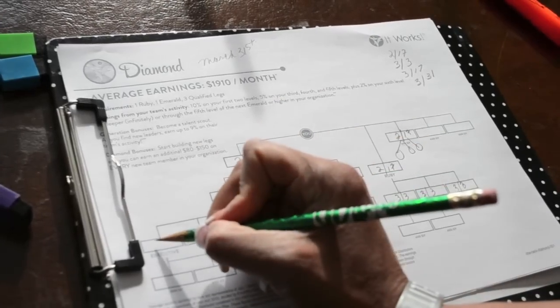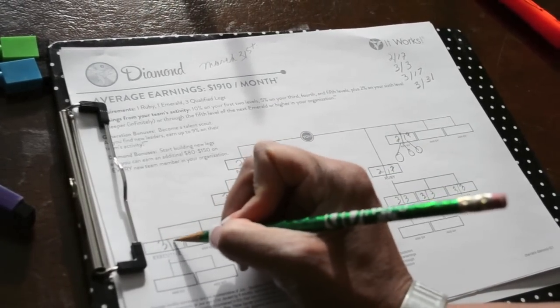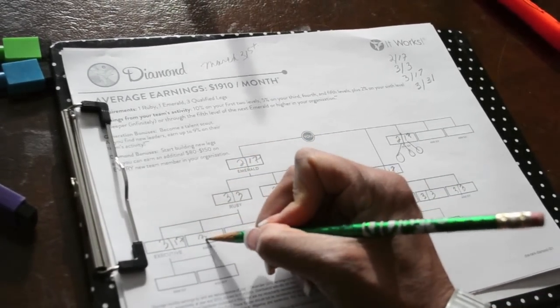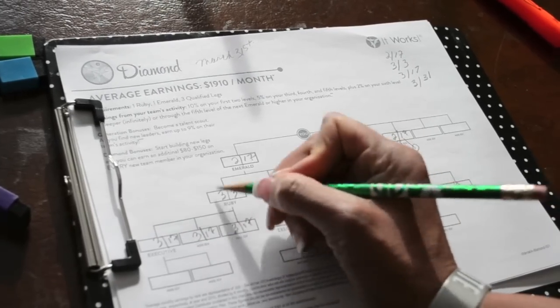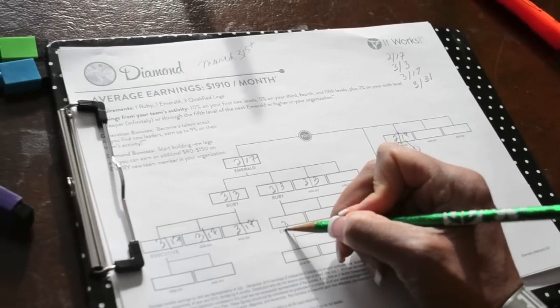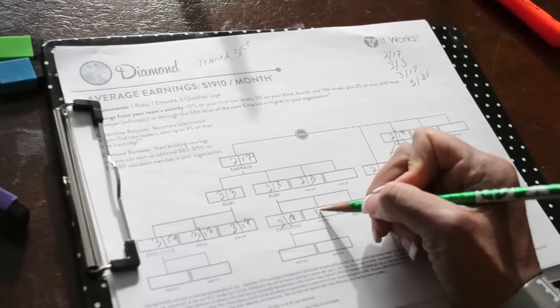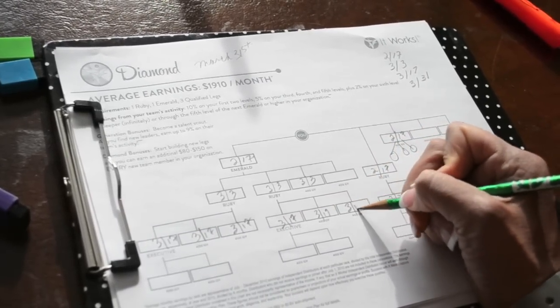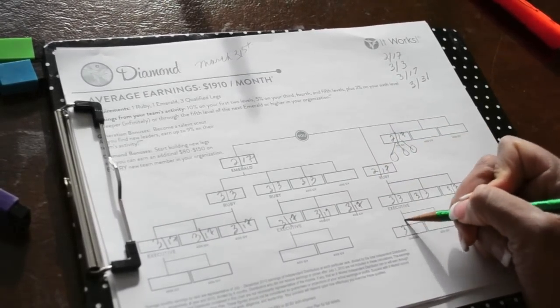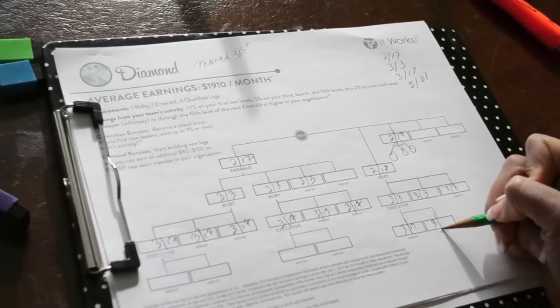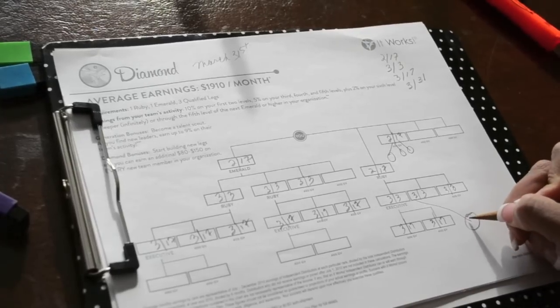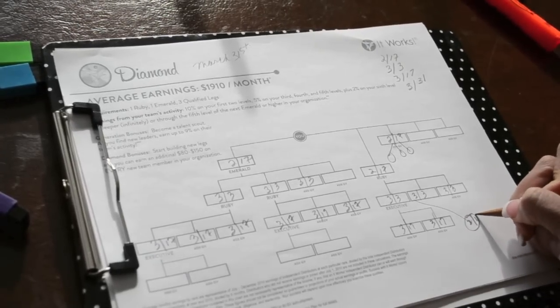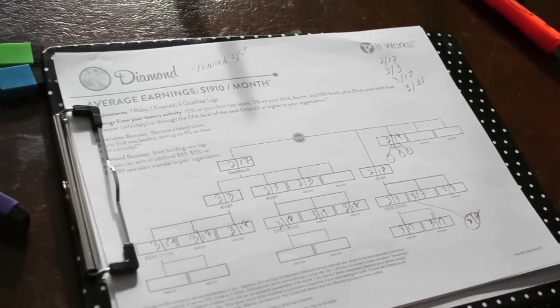So this guy is going to go out and find at least three people by March 17th. So here are three brand new distributors that this person has found. This guy's going to go out and get their three people by this date. And this person's getting their three people. You can see we've already created a ruby. And diamond is just three rubies. So we're in place.